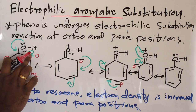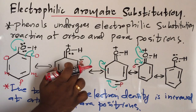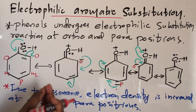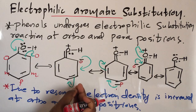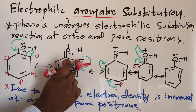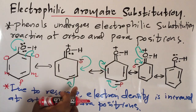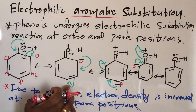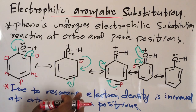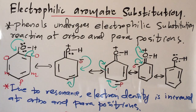So the OH group directs the incoming electrophile to ortho and para position. Because the electrophile needs electron — negative charge. So the electrophile will attach at ortho and para position. Due to high electron density on ortho and para position, substitution will take place at ortho and para position.